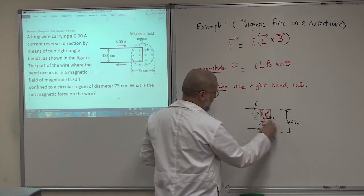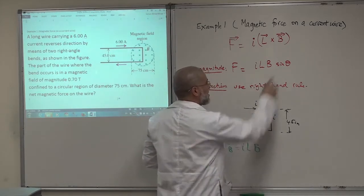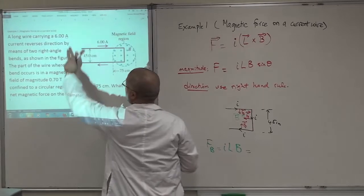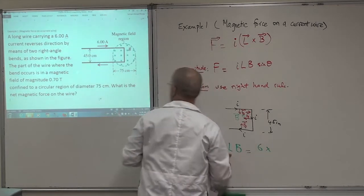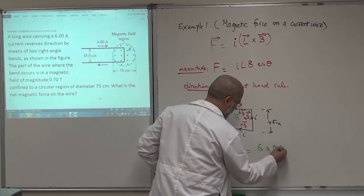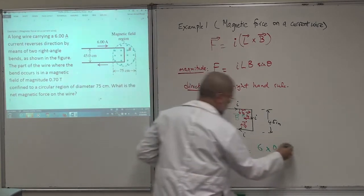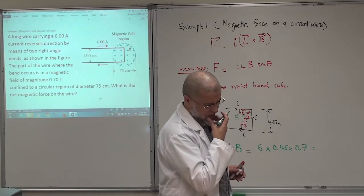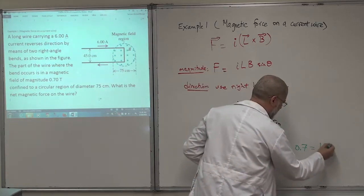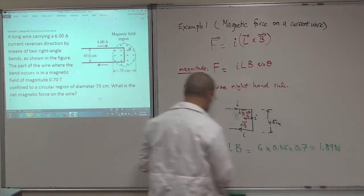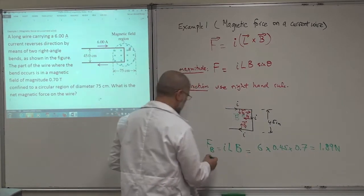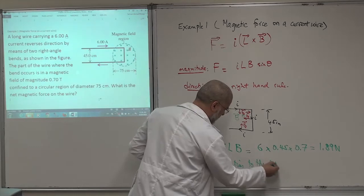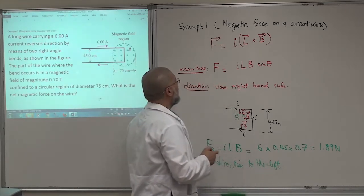The angle between I and B is 90 degrees, so sine of 90 gives 1, and it reduces to F = I L B. Plugging in the numbers: the current is 6 ampere, times 0.45 meters, times 0.7 tesla. The answer is 1.89 newton, and the direction is to the left.